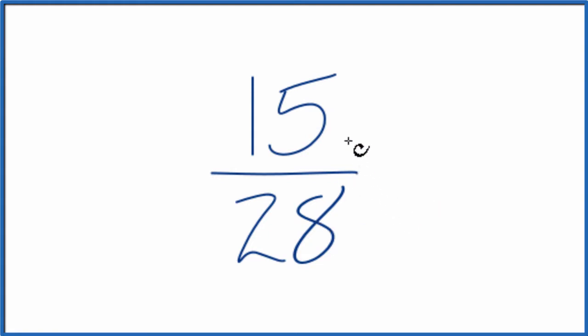To do that, we need to find the greatest common multiple for both 15 and 28. So let's list the multiples for 15. We could have 1 times 15, 3 times 5, and that's about it.